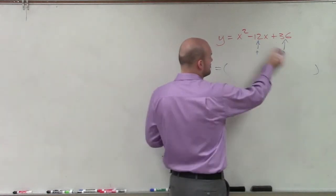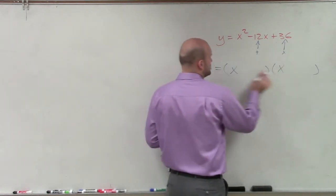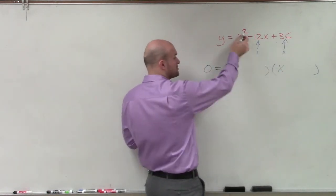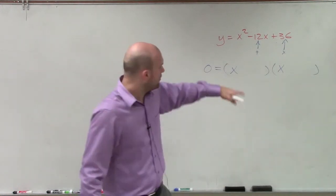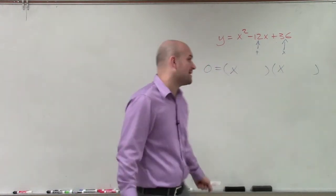When you apply FOIL, you multiply the first two terms times the first two terms. Since we have x squared, we know that x times x equals x squared. But what are going to be my second terms of my binomial?